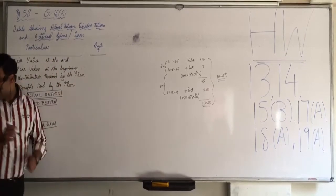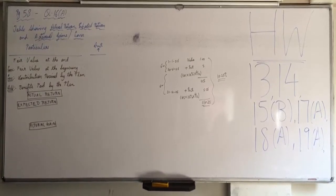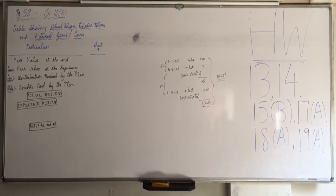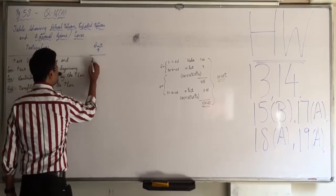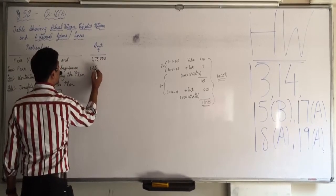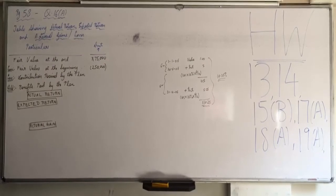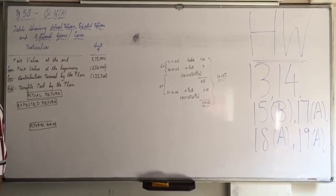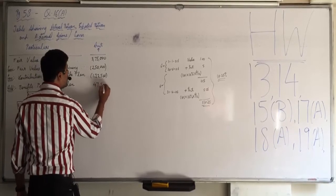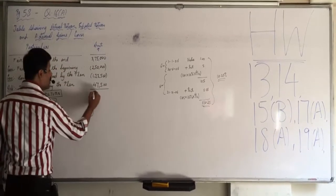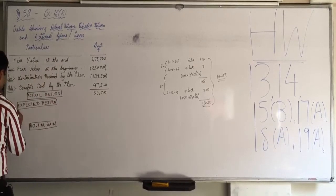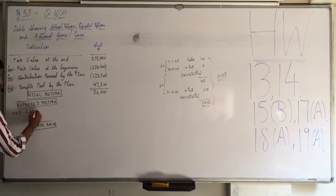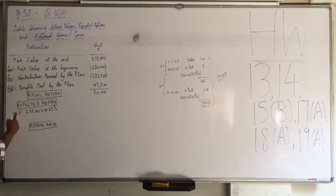Check your answers. Fair value at the end of the year is $375,000. Beginning of the year minus $250,000. Contribution received, further we have invested $122,500. Benefits paid by the plan, so we have received interest and dividend of $47,500. Means the actual return is $50,000.